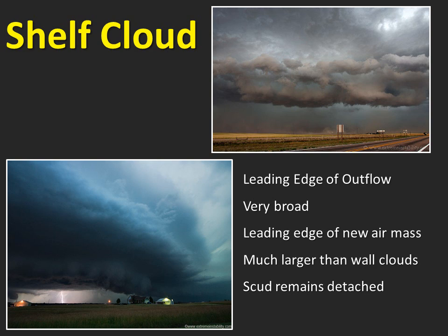We have one more type of cloud to discuss, and that is the shelf cloud. A shelf cloud is a low, horizontal banded cloud attached to the base of a thunderstorm. Rising cloud motion often can be seen in the leading outer part of the shelf cloud, while the underside often appears turbulent and wind torn. Generally, a shelf cloud appears on the leading edge of a storm. Portions of a shelf cloud can sometimes be mistaken for a wall cloud because of their dark and ominous appearance, but there are key differences. Wall clouds form beneath the storm's updraft, while shelf clouds form along the leading edge of a strong downdraft area, at the leading edge of the rain-cooled air as it hits the ground and spreads out away from the thunderstorm.